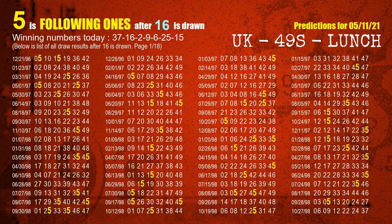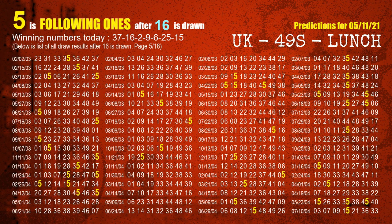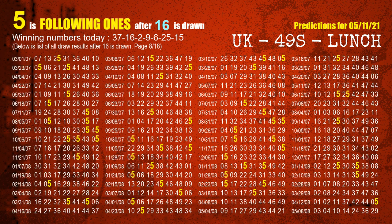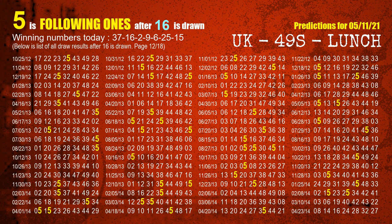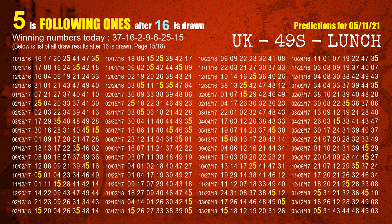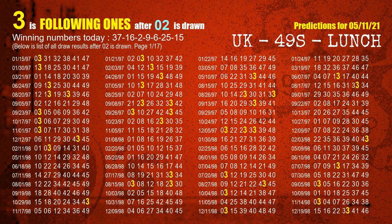The second winning number is 16. The most frequently following units digit is 5 when 16 is the winning number in the last draw. The third winning number is 02. The most frequently following units digit is 3 when 02 is the winning number in the last draw.